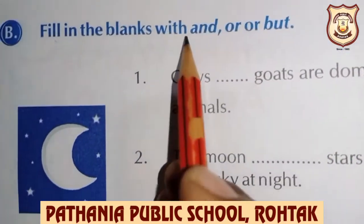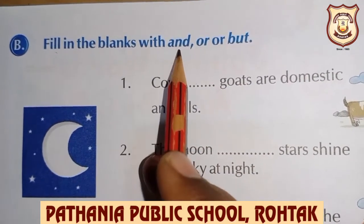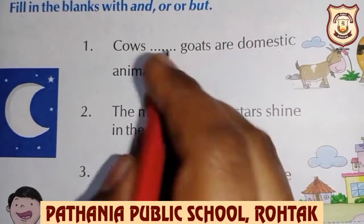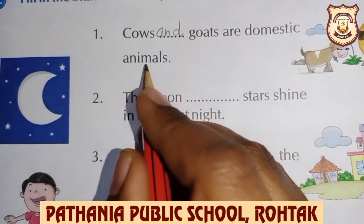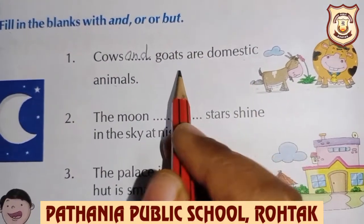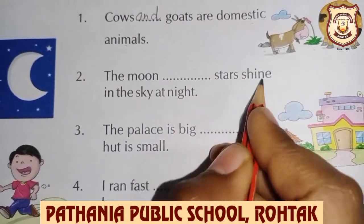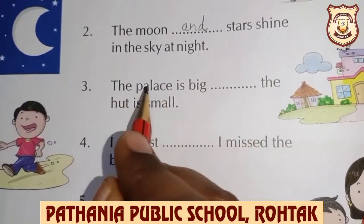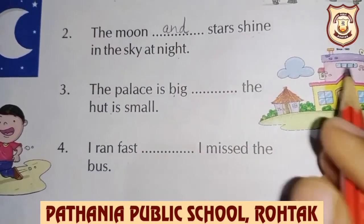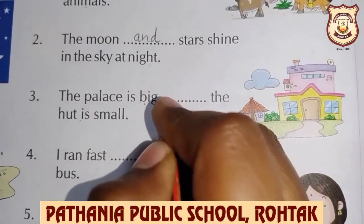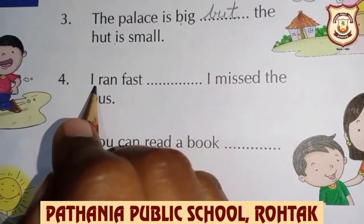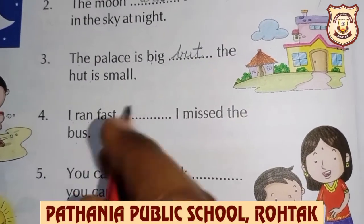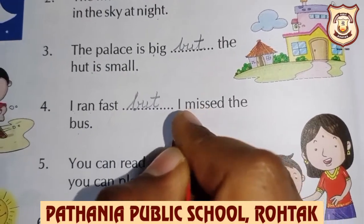Now question number B and C: filling in the blanks with and, or, or but. 'Cows and goats are domestic animals.' — Cows and goats are domestic animals. 'The moon and stars shine in the sky at night.' 'The palace is big, but the hut is small.' — Palace is big but hut is small. 'I run fast, but I missed the bus.' — I ran fast but missed the bus.